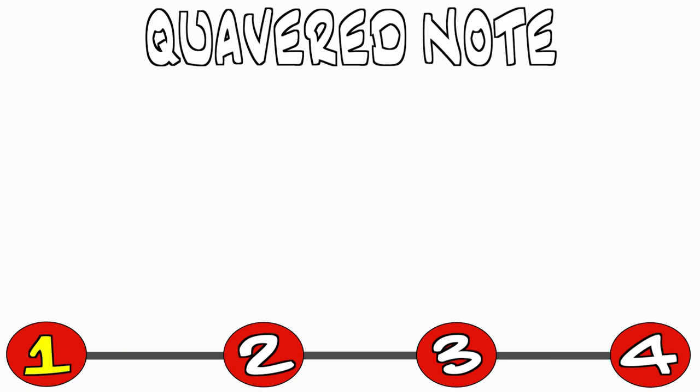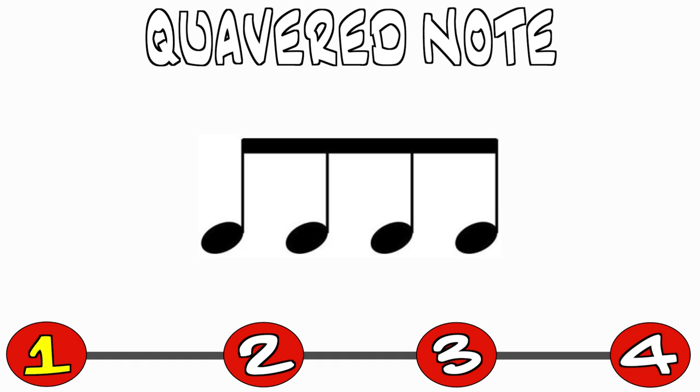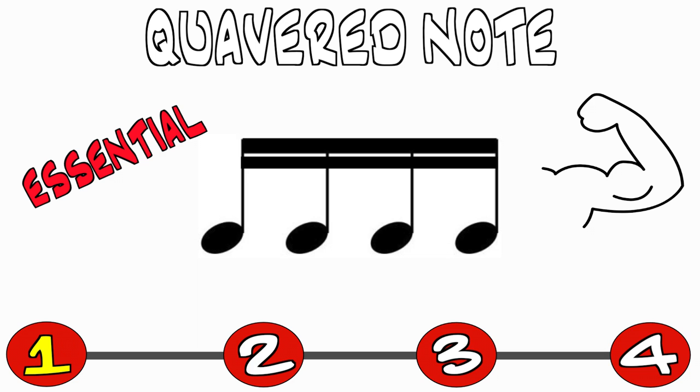Note that a quavered note is simply any note with a flag like an eighth or a sixteenth note. For example, a single beam with four notes grouped together would indicate four eighth notes. Two beams would indicate sixteenths, and so on. These groupings are essential for the legibility of strong beats within a composition, but they also have their own sets of limitations in certain case situations.